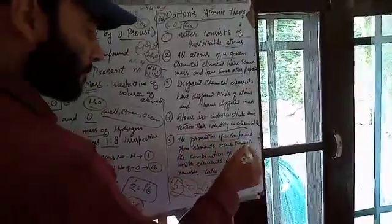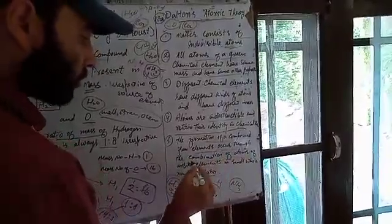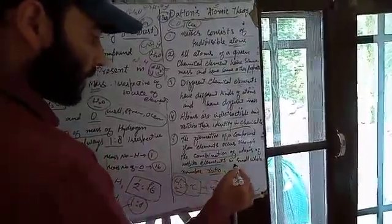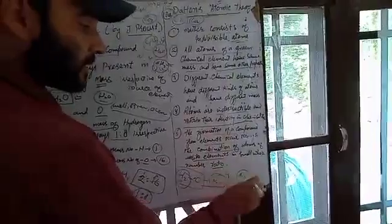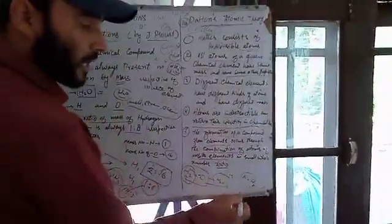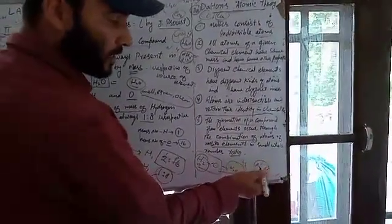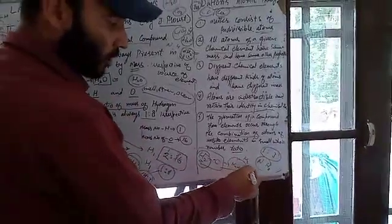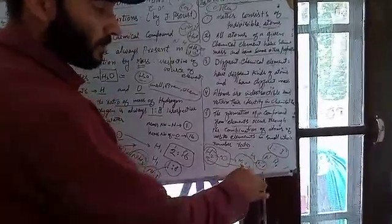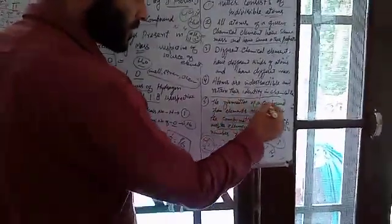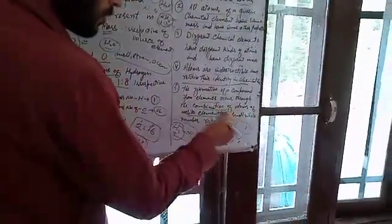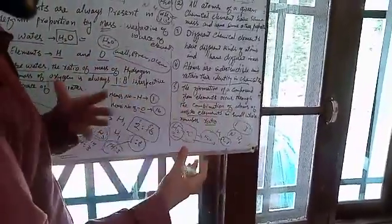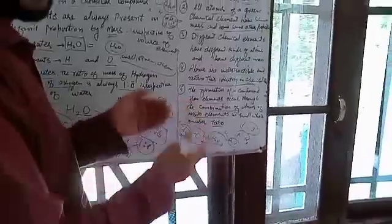Postulate five: the formation of a compound from elements occurs through the combination of atoms of unlike elements in a small whole number ratio. For example, in ammonia, nitrogen and hydrogen combine in the ratio 1:3; in water, hydrogen and oxygen combine in the ratio 2:1. Different atoms combine in small whole number ratios to form compounds.